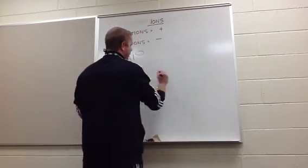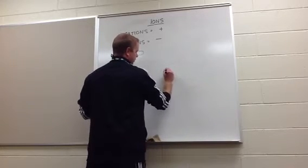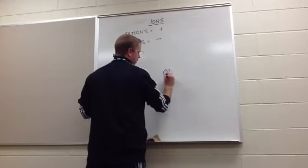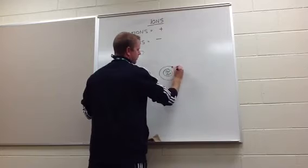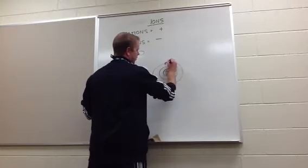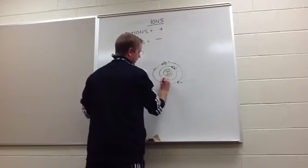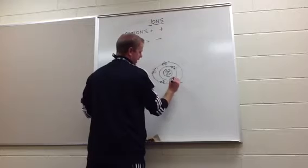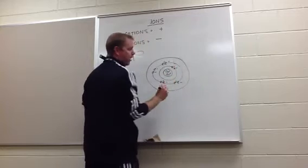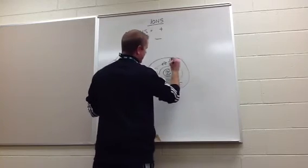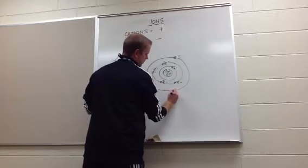When you draw the Bohr model for this, you draw a nucleus with 13 protons and 13 neutrons inside it. Then you draw 2 electrons in the first shell, 8 electrons in the second shell — that gives you a total of 10 — so in the outermost valence shell there are only 3 electrons.